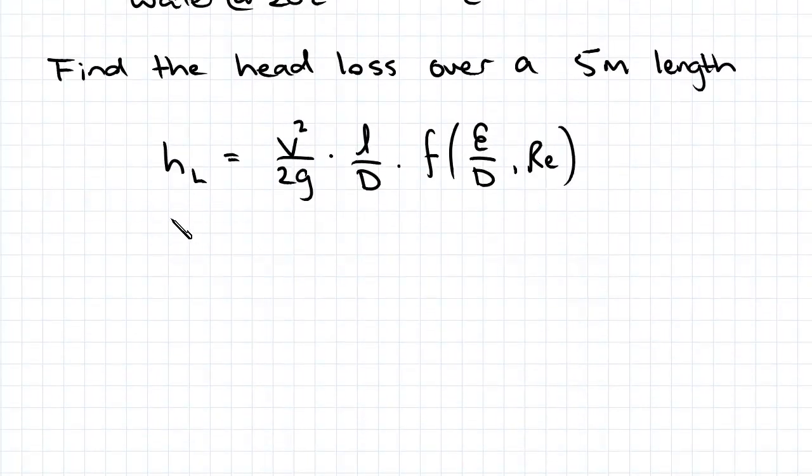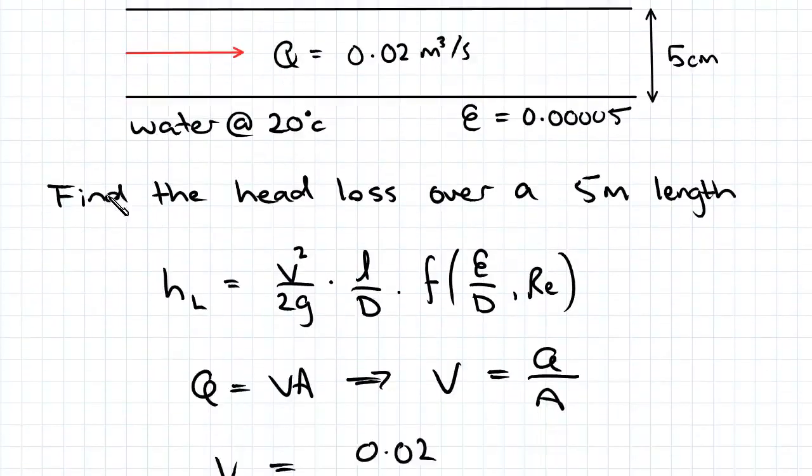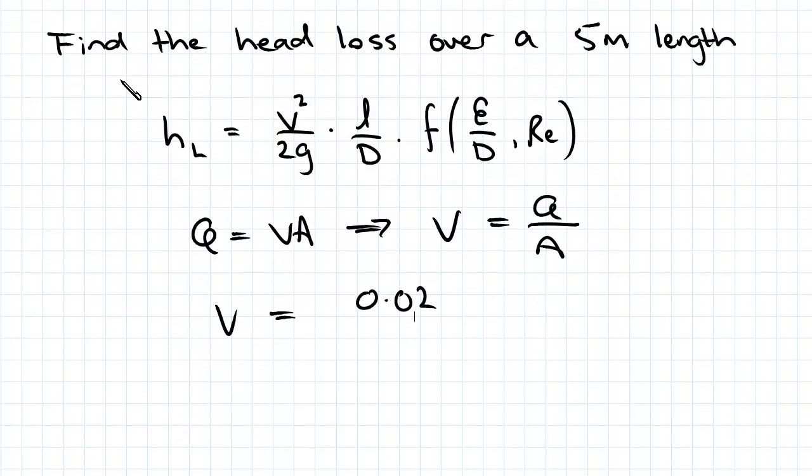Subbing in our values for that, we've given 0.02 meters cubed per second, and we're dividing that by pi d squared on 4. D was 0.05 squared times pi on 4, and that simplifies down to 10.19 meters per second.